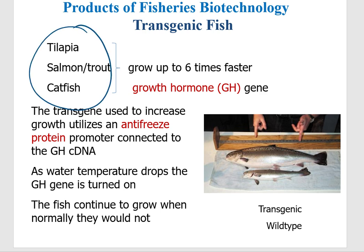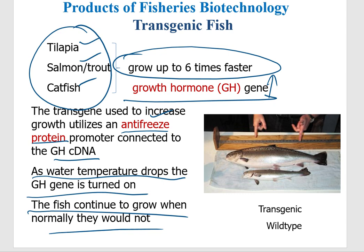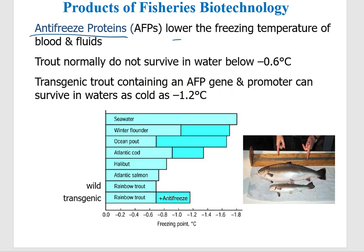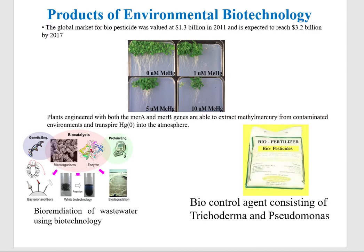An attempt was made to make fishes grow six times faster by installing growth hormone genes — done in tilapia, salmon, and trout. An anti-freeze protein gene was inserted, connected to the complementary DNA of the growth hormone. As the water temperature drops, the gene chain is turned on — meaning as temperature dropped, the anti-freeze protein gene became active and the fish continued to grow. This anti-freeze protein lowers the freezing temperature of blood and fluid; trout that normally cannot grow at 0.6°C was able to grow with much larger size comparatively.